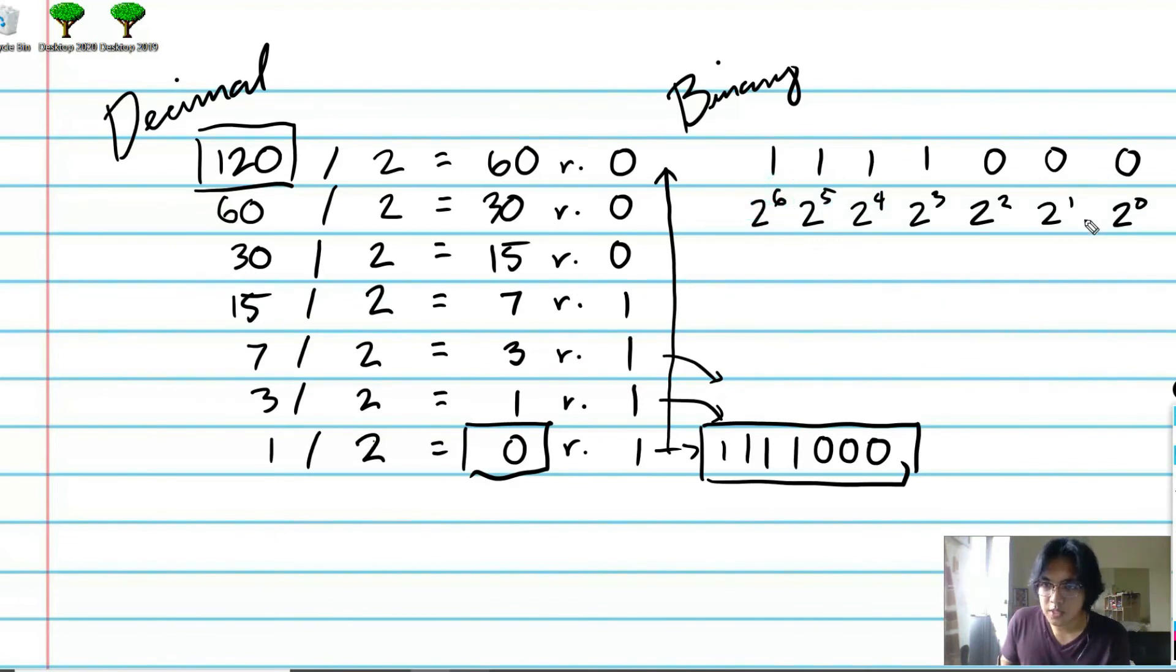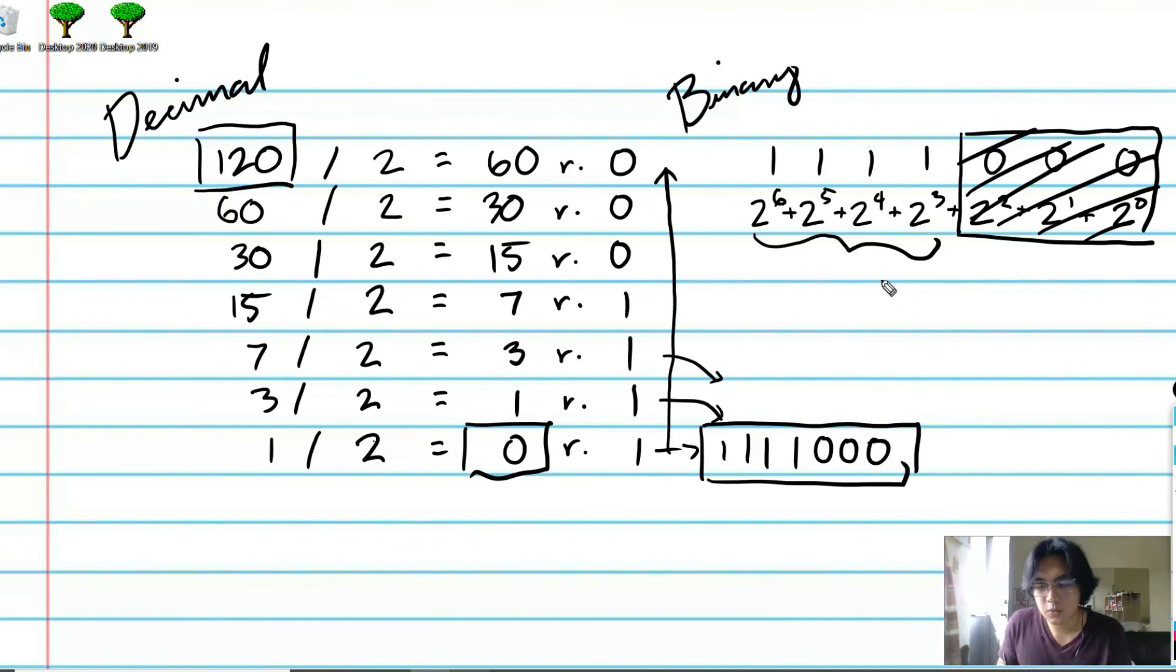And of course, we would need to add them up. But since these are 0s, then we can leave them be. We don't need them anymore. And we can just add these ones. We can just add the bits that are activated, the bits that are turned on, those that are 1.